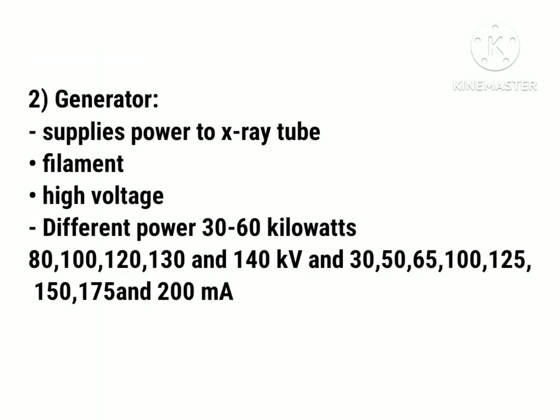The second component of the gantry is the generator, which is present inside it and supplies power to the x-ray tube so that the x-ray tube can produce electrons needed to produce x-ray photons. The power supply is provided to the filament of the x-ray tube so that the filament can produce high-energy electrons which get accelerated towards the anode, where x-ray photons are produced. The power supply of the generator is 30 to 60 kilowatts, and the exposure techniques range from 80 to 140 kilovolts and 30 to 200 milliamperes.